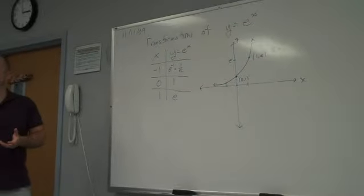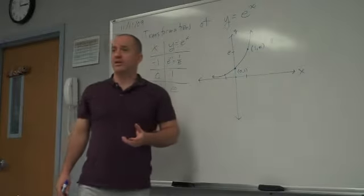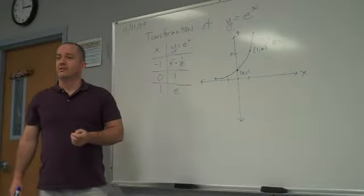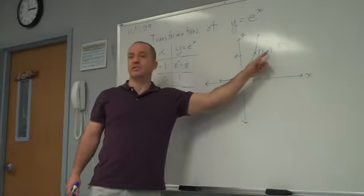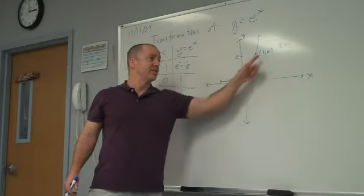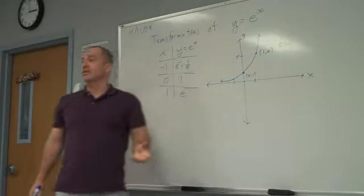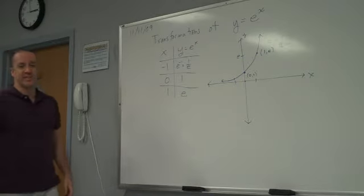Now, all exponential graphs will look something like this, as long as the base is a number bigger than 1. 2 to the x looks a lot like this, except this is 1 half and this is 1 comma 2. 5 to the x looks a lot like this. This will be 1 fifth, this will be 1 comma 5. Any graph of any positive number larger than 1 will look something like this.